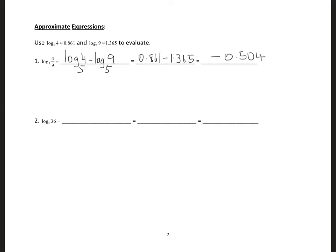The next one: I'm given logarithm to base 5 of 36. I don't see 36 directly — I only have 4 and 9 — but I can break 36 down into 4 times 9. So this becomes logarithm to base 5 of 4 plus logarithm to base 5 of 9. This time, instead of subtracting like in example 1, we are adding: 0.861 plus 1.365, which gives us 2.226.